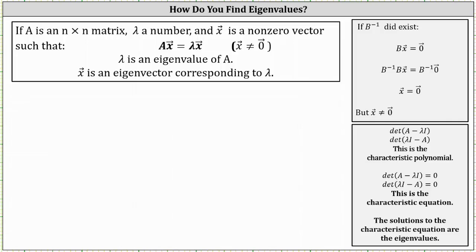This lesson will show how to determine the eigenvalues of a given two by two matrix. For review, if A is an n by n matrix, lambda is a number or scalar, and vector x is a non-zero vector such that matrix A times vector x equals lambda times vector x, then lambda is an eigenvalue of matrix A and vector x is an eigenvector corresponding to lambda.